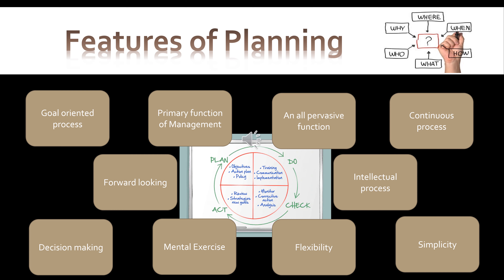Now, continuous process: planning is made for a particular period, and there is a need for new planning after the expiry of that period. Next, forward-looking: planning is made for performing work in the future, so it is forward-looking in nature.